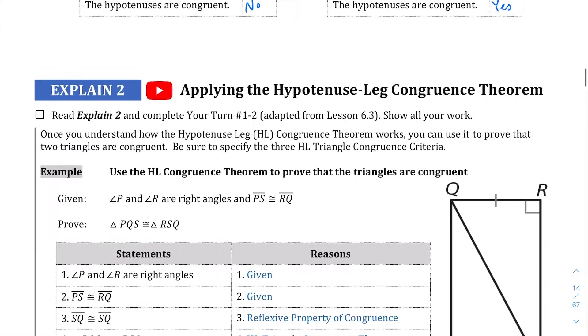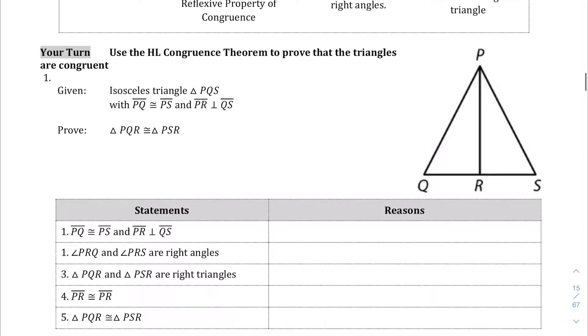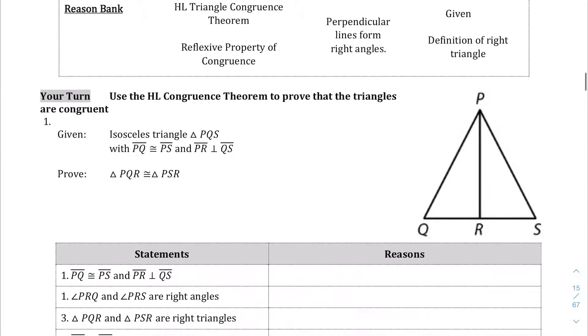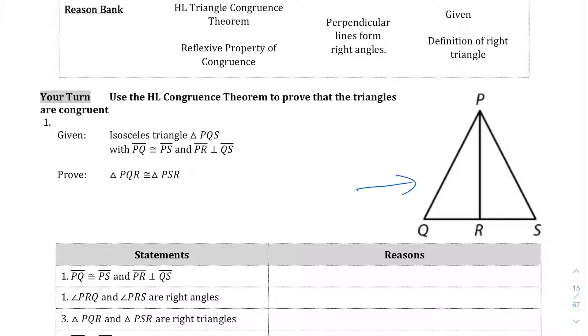So you can read Explain 2 on your own because we're going to jump into this proof here with this reason bank as a reference. So we're given this diagram here with a bunch of given statements, but basically we have this bigger triangle, PQS, which I'm going to shade real quick. PQS is this bigger triangle here, where PQ, so this side, is congruent to PS, and PR is perpendicular to QS, which means this creates 90 degree angles. So that's 90 degrees, and we're going to assume that this is 90 degrees as well.